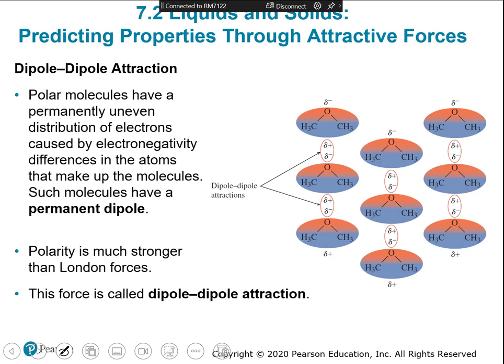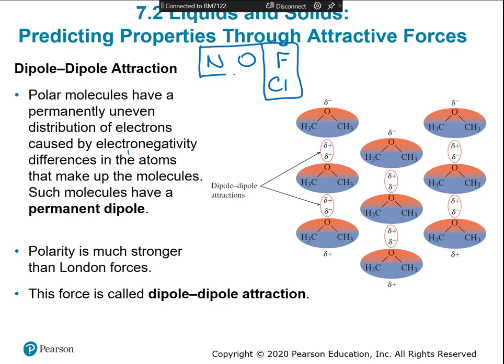The next intermolecular force involves a permanent electron imbalance. Polar molecules contain nitrogen, oxygen, fluorine, or chlorine - in the upper right corner of the periodic table. These atoms are electronegative and pull electrons toward themselves. For example, in HCl, chlorine pulls electrons closer, creating a negative side and a positive side to the molecule - that's a polar molecule.